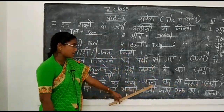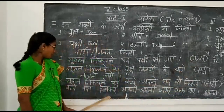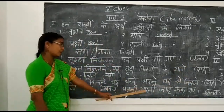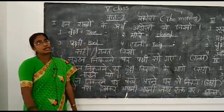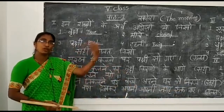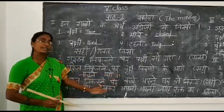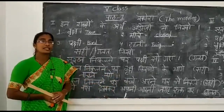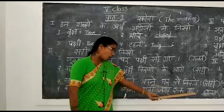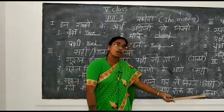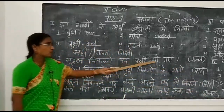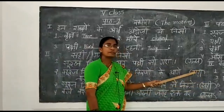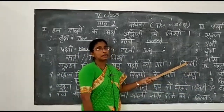Third sentence: 'Suraj ni kalne par bachche apane ghar se nikalne lage.' When the sun rises, children come out from their homes - this is correct, sahi. Fourth sentence: 'Bachche bas dekkar apane apane jagah par ruk gaye.' Children saw the bus and stayed at their respective places - this is wrong, galat. So: first and last sentences are false, second and third are correct.